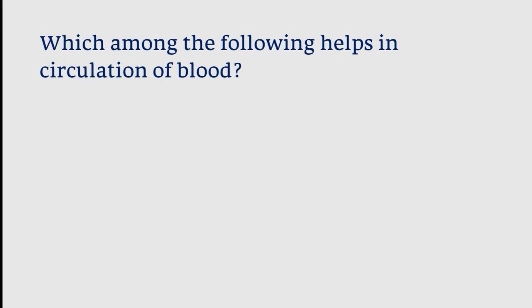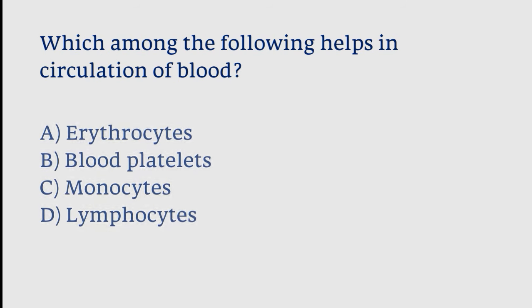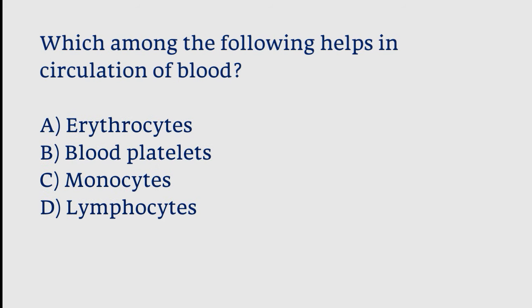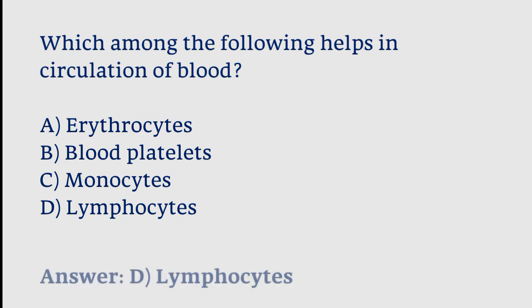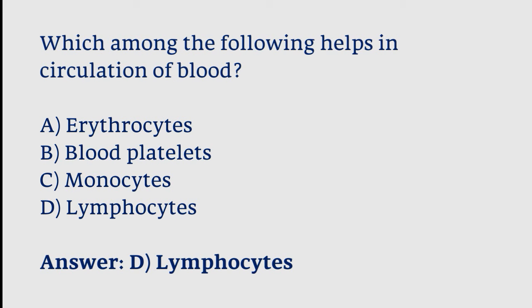Which among the following helps in circulation of blood? Options: erythrocytes, blood platelets, monocytes, lymphocytes. The correct answer is option D. Lymphocytes help in circulation of blood in the human body.